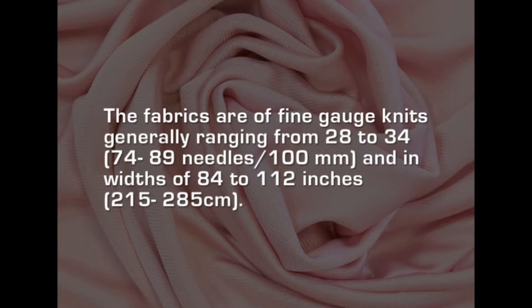Simplex fabrics are produced with spring beard needles on a machine that is essentially two tricot machines arranged back to back. The fabrics are of fine gauge, generally ranging from 28 to 34 needles (74 to 89 needles per 100 mm) and in width of 84 to 112 inches (215 to 285 centimeters). The stitches appear on both sides of the cloth, which looks like a double-faced tricot. Simplex fabrics are made of fine yarn but are nevertheless relatively dense and thick. They are used for purposes such as gloves, handbags, sportswear and slip covers. Eyelet and other open work may also be produced on simplex machines.